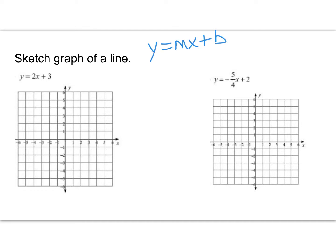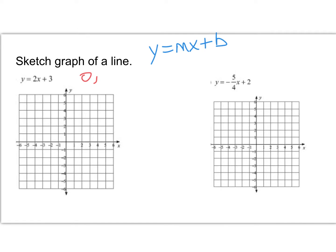When it is slope-intercept form, the number right here, plus 3, is our y-intercept. That means when x is 0, the y is 3.